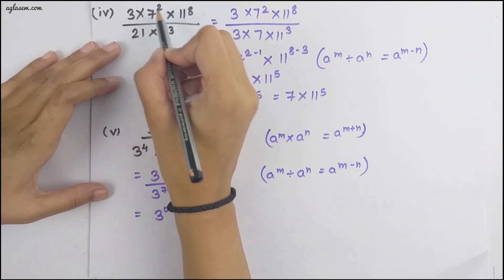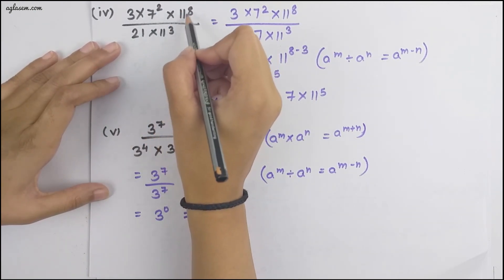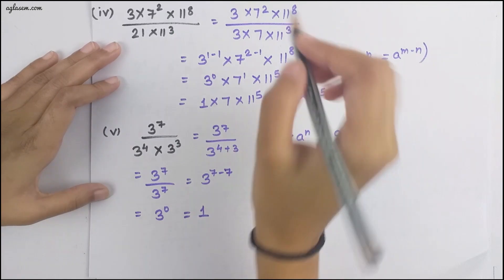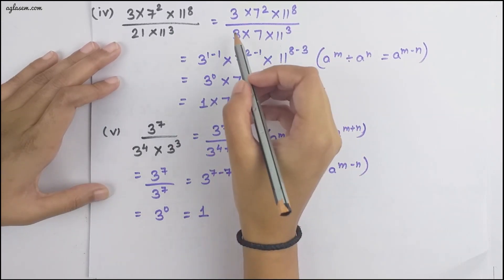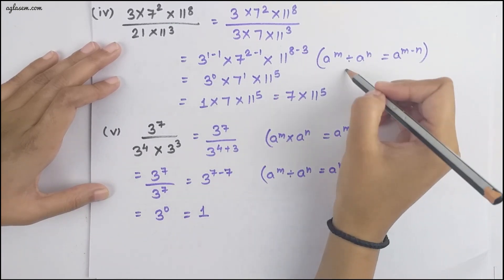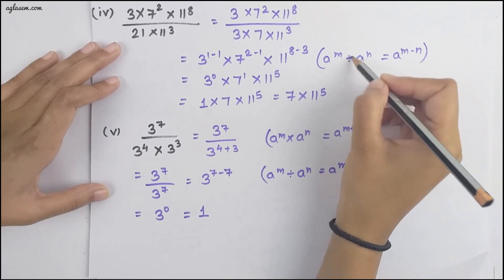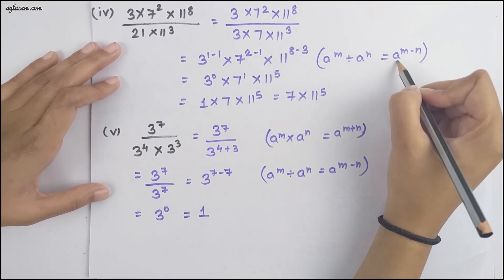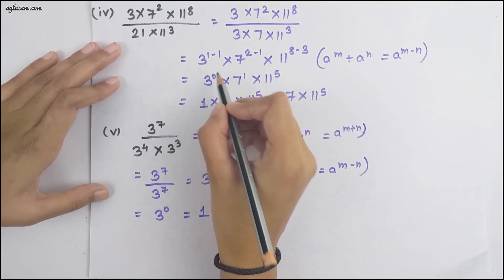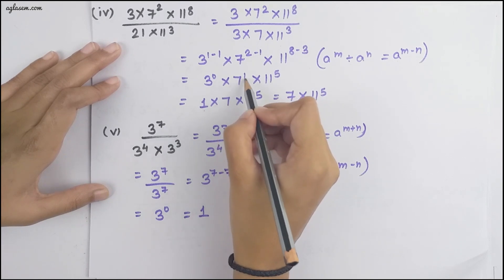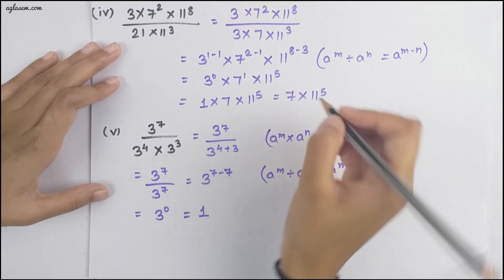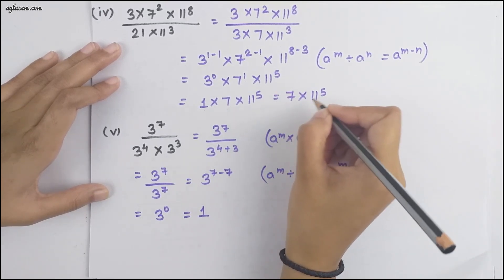Moving to the fourth part: (3 × 7² × 11⁸) ÷ (21 × 11³). We separate the bases. Using a^m ÷ a^n = a^(m−n): 3^(1−1) × 7^(2−1) × 11^(8−3). This gives 3⁰ × 7¹ × 11⁵ = 1 × 7 × 11⁵ = 7 × 11 raised to the power 5.